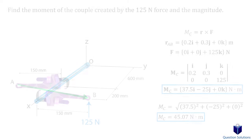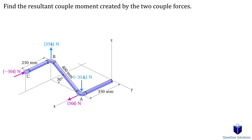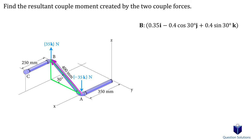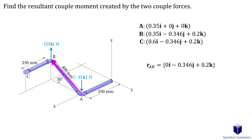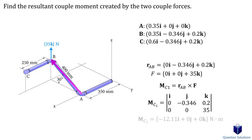Let's take a look at one last example where we have to express the resultant moment created by four forces affecting the pipes. We figure out the couple moment created by each pair of forces. Looking at the upward forces first, we need a position vector from A to B. To get that, we first need to figure out the location of point B using trigonometry: the y component is 0.4 cosine 30 degrees and the z component is 0.4 sine 30 degrees, and the x component is already given as 0.35 meters.